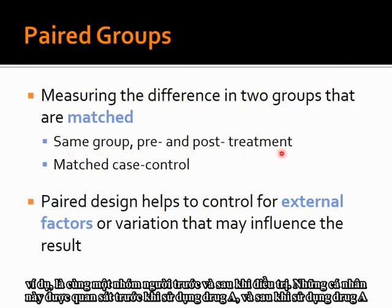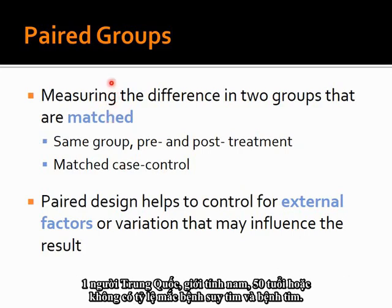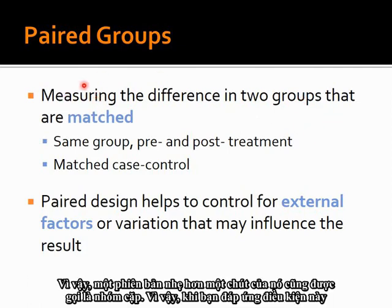For example, it's the same group of people pre- and post-treatment. These individuals before taking drug A and after taking drug A are matched. In matched case-control, they are two different groups of people but you match them as closely as possible — for instance, individual A is a Chinese male age 50 with no incidence of heart disease, and individual number one in group B is also a Chinese male age 50. You try to make these two people as similar as possible.